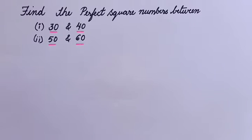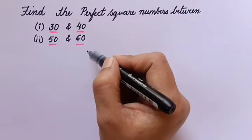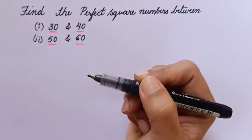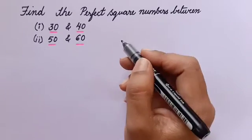Hi everyone, welcome back to my channel Train Tutor. In this session, I'm going to solve a problem: find the perfect square numbers between 30 and 40, and between 50 and 60. Let's see how to solve this problem.